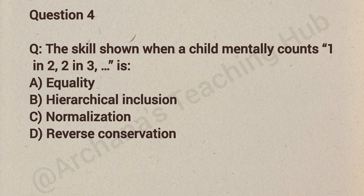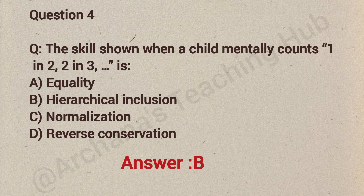Question number 4. The skill shown when a child mentally counts 1 in 2, 2 in 3 is: Option A - Equality. Option B - Hierarchical inclusion. Option C - Normalization. Option D - Reverse conservation. Correct answer is B: Hierarchical inclusion. This is the cardinal counting principle where each number includes the previous.